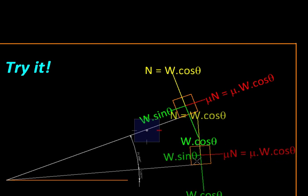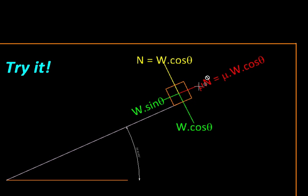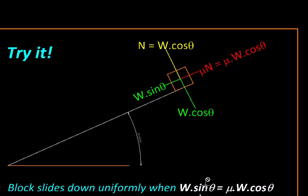And therefore, a stage is going to come where the two forces down the plane and the frictional force are going to balance each other. And at that point, the block will just start sliding. So let us write that condition. So W sin θ, the downward force, is equal to μ W cos θ, the breaking force.